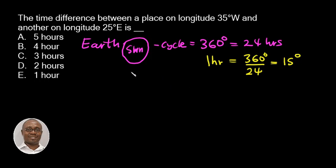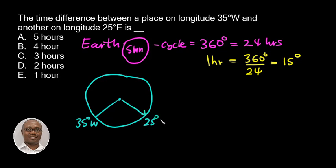So let's go back to the question which says that the time difference between a place on longitude 35 degrees west and another on longitude 25 degrees east. So what is the time difference? What that implies is we'll add 35 plus 25 and that will give us 60 degrees.